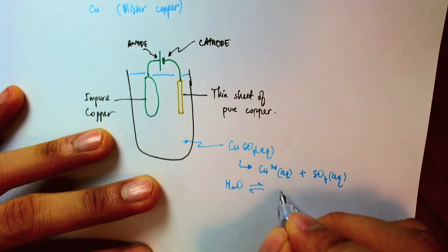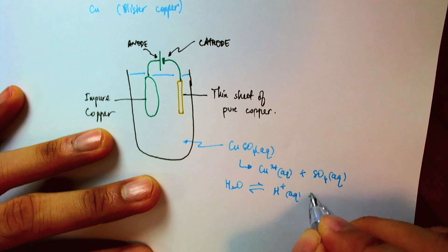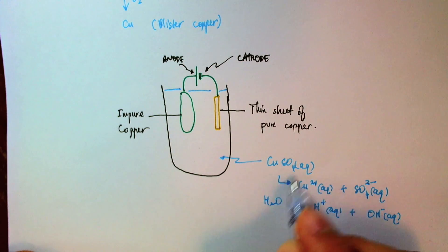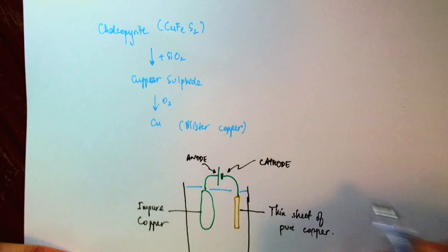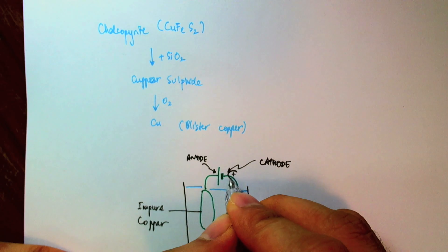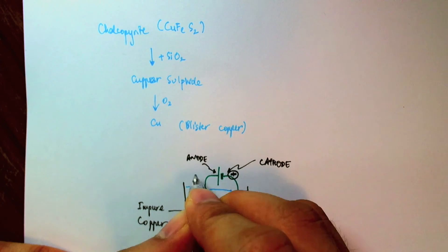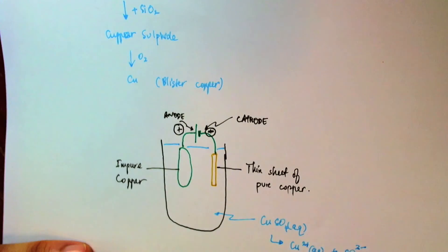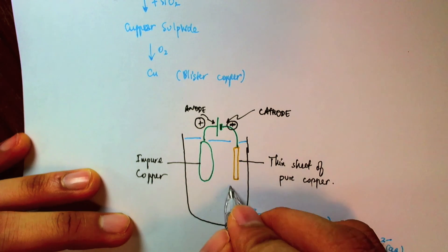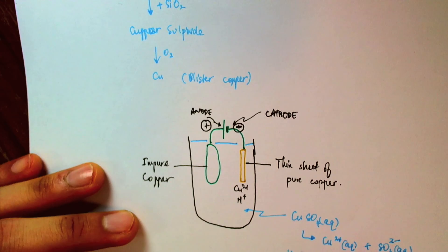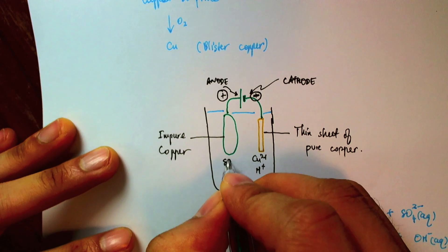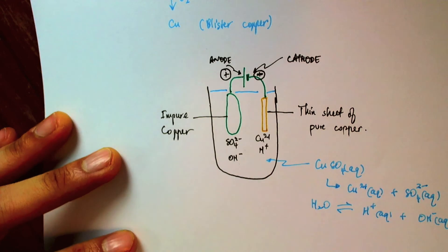we also have water slightly dissociated into hydrogen and hydroxide ions. So the positive ions will be attracted to the cathode, since it is negative. So the positive ions will be attracted to the cathode. So I will write them below the cathode. Cu2+, H+. And the negative ions will be attracted to the anode because the negatives will be attracted to the positives. So I have sulfate and hydroxide.